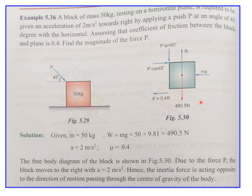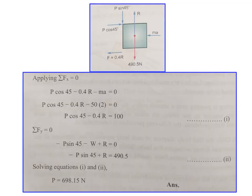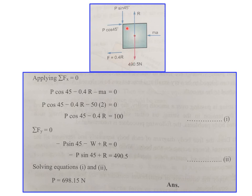Applying equations of equilibrium: ΣFx = 0 gives P·cos45° − 0.4R − m·a = 0 (equation 1). ΣFy = 0 gives R − P·sin45° − W = 0 (equation 2), where W = 490.5 N. Solving equations 1 and 2, the magnitude of force P is 698.15 N.